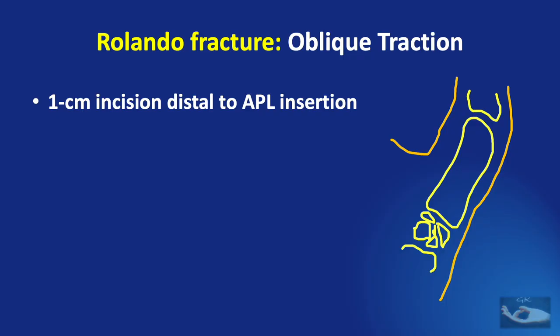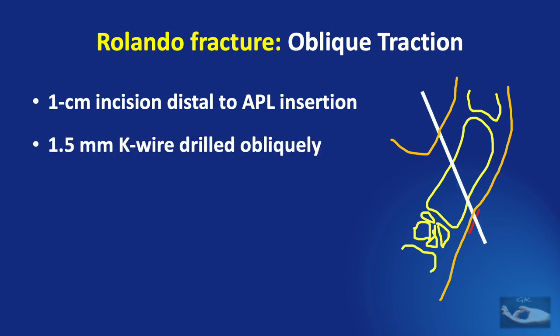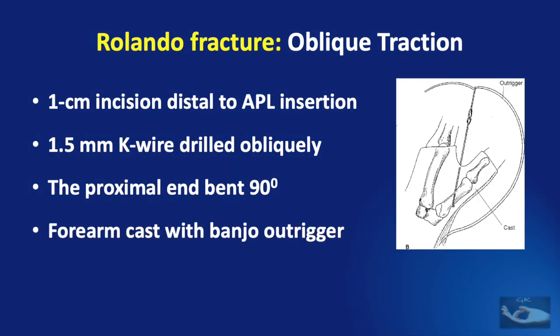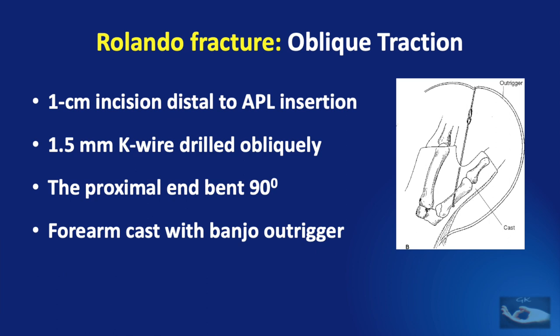In the oblique traction technique, a 1 cm incision is made just distal to the abductor pollicis longus insertion, radial and volar to the extensor pollicis brevis tendon. A 1.5 mm K-wire is drilled obliquely through the thumb metacarpal in a distal and ulnar direction with a slight volar tilt, so that it exits in the thumb-index finger web space. The proximal end of the pin is bent 90 degrees and the incision is closed. A forearm cast with a banjo outrigger is applied with exclusion of the thumb web, and rubber band traction is maintained for 4 to 6 weeks.